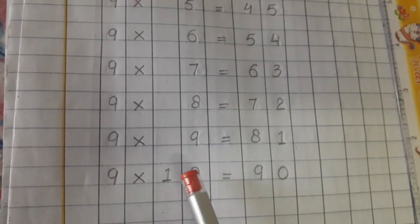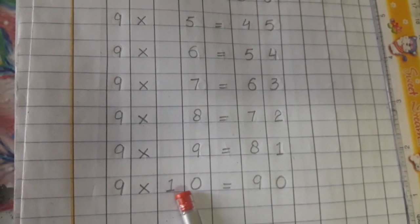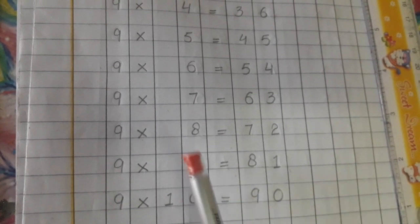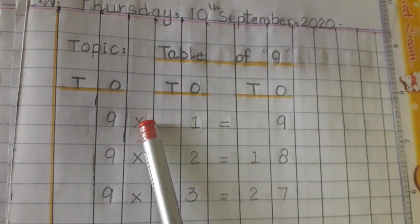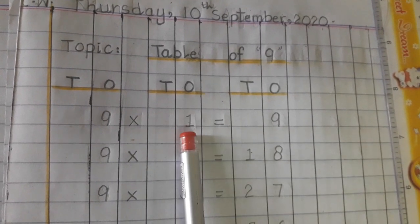So we will write it in the separate boxes. Skip one line, okay? Make this type of column, tens and ones, so that you can write easily. One digit will come in one box only.